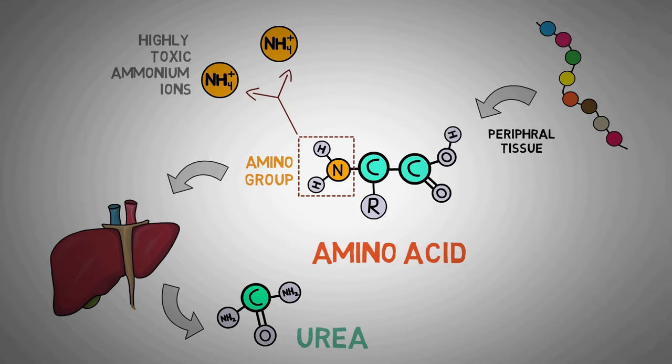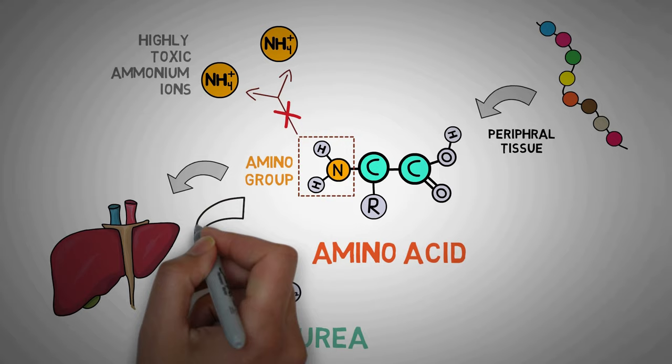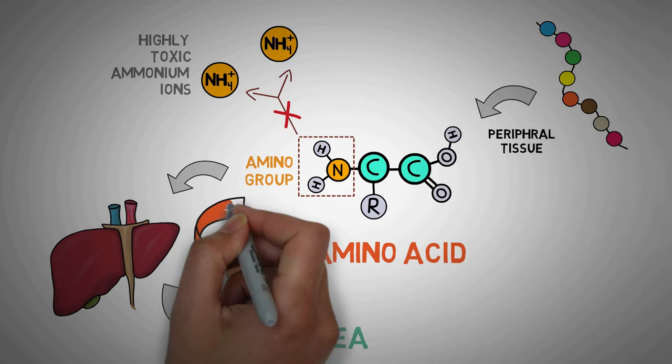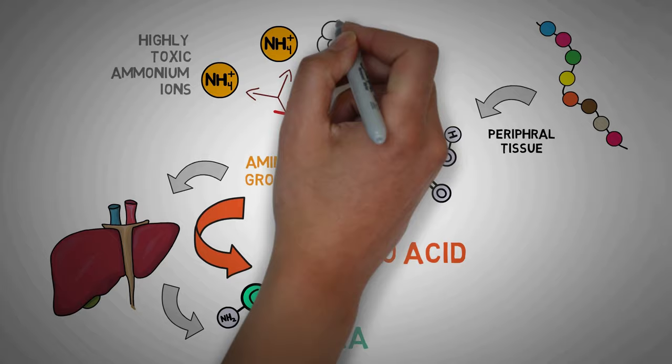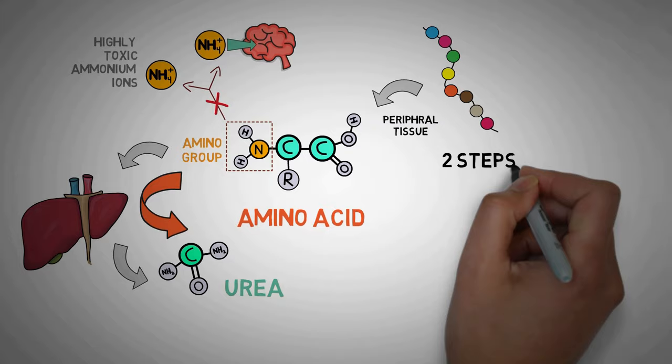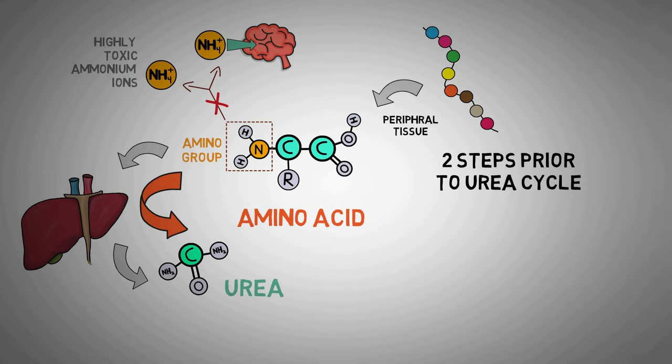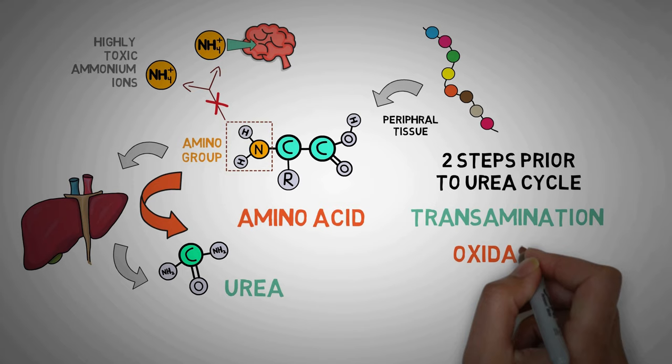These nitrogen-containing amino groups cannot be released into our blood directly because free ammonium ions are highly toxic to our body. So there must exist a way to transport this nitrogenous waste to the liver without converting it into its ionic form, i.e. free ammonium ions or ammonia as that can enter our brain and can lead to lots of bad stuff. So there are basically two steps that take place before the urea cycle begins.